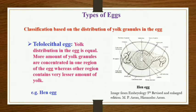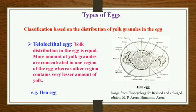The next type of egg is the telolecithal egg. In this kind of egg the yolk is unequally distributed throughout the egg. You find one part of the egg is heavily concentrated with yolk whereas the other part has a lesser concentration of yolk granules.